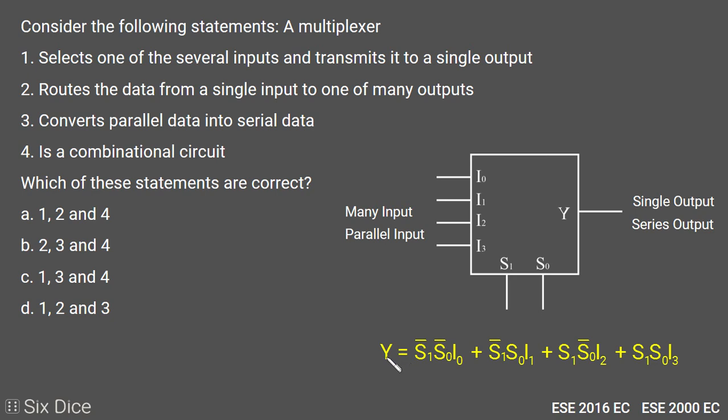The single output Y will be written as a sum of all the parallel inputs, and with different values of the select line, only a single input will be passed to the output. So it converts parallel data into serial data.